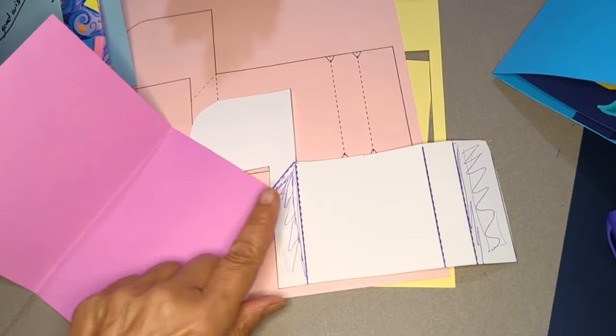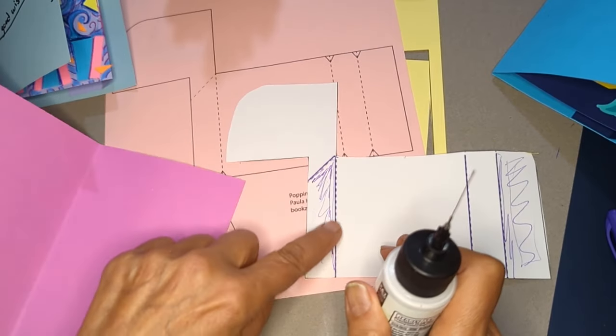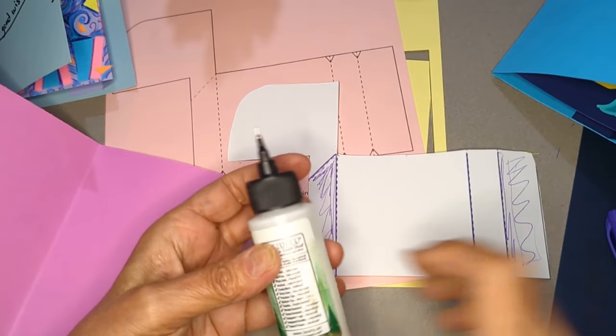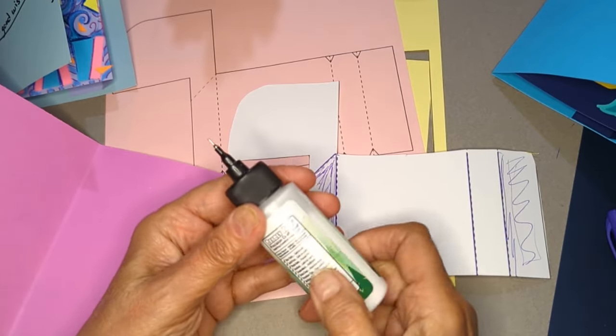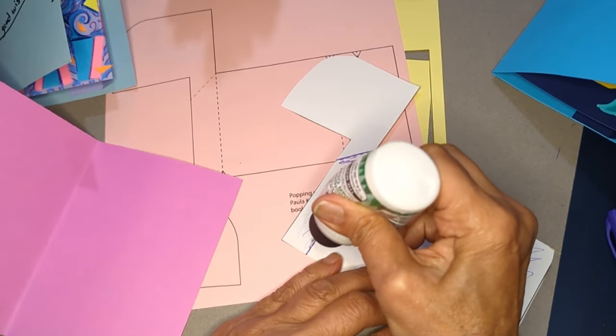And we only start with one at a time and the one to start with is the one that's underneath this funny shape. Okay so I'm using some white glue. You can use a glue stick, whatever glue works for you, or double-sided tape if you want.